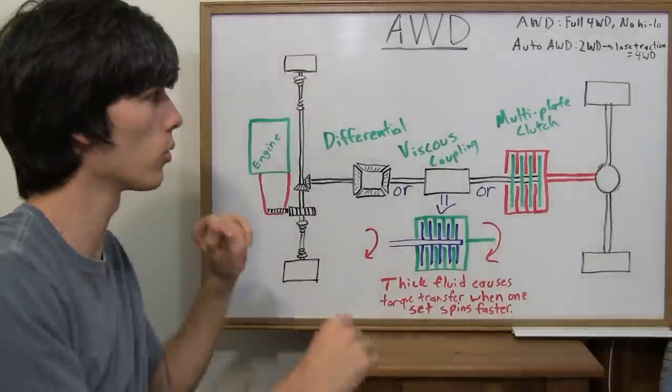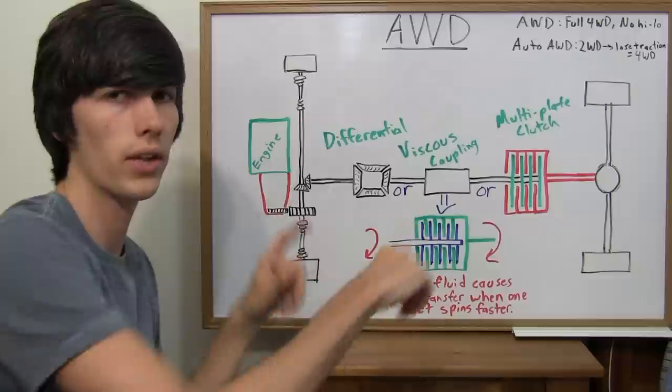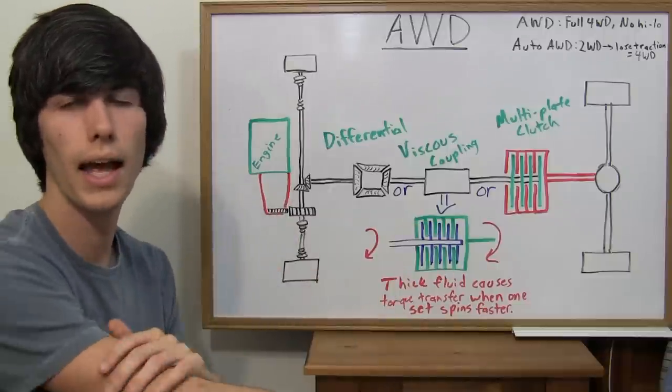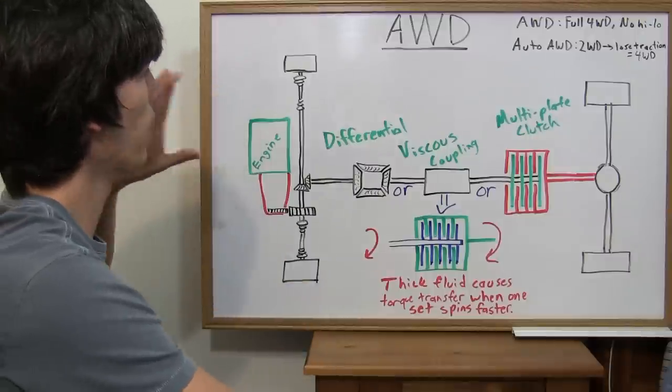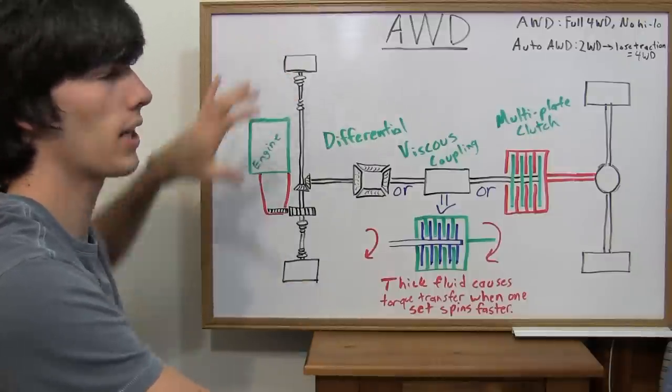So, a computer will activate that, and once you regain traction, and it sees that all four tires are once again spinning at the same speed, it will disengage this clutch pack, and then it will just be powering the front tires again.